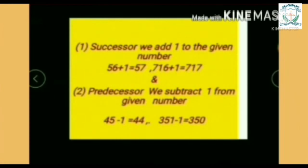Predecessor: we subtract 1 from the given number. For example, 45 minus 1 equals 44. Here, 44 is the predecessor of 45. 351 minus 1 equals 350. Here, 350 is the predecessor of 351.